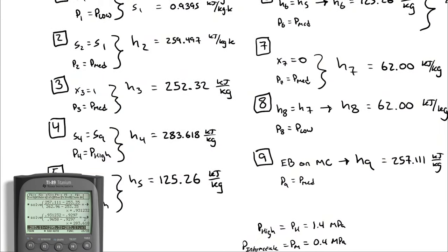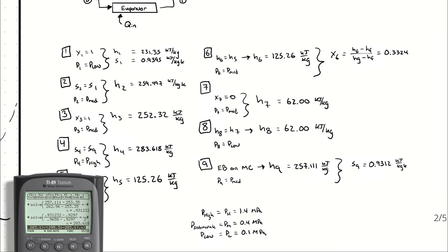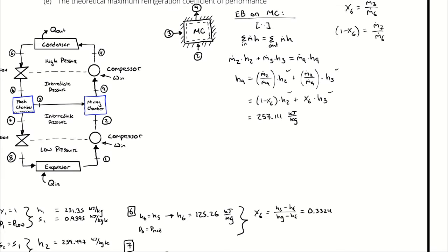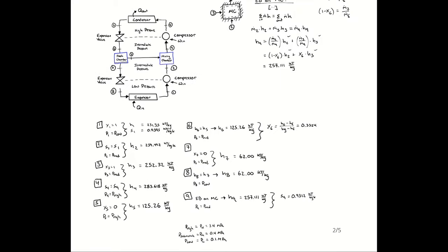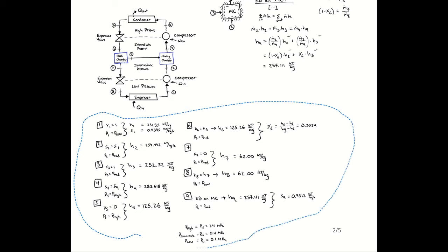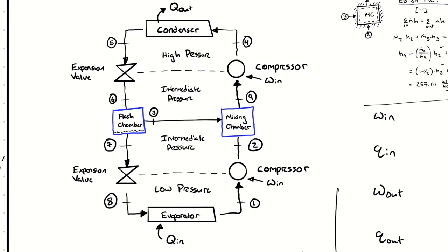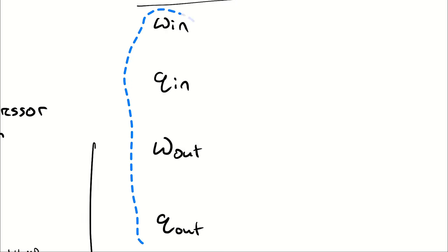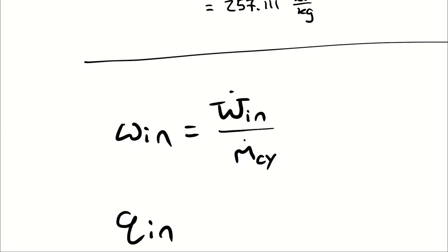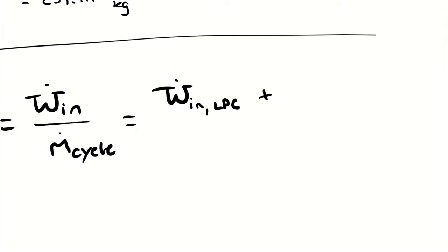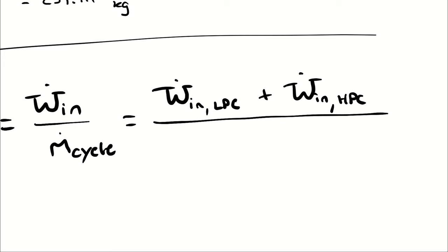With all enthalpies at all nine state points determined, I can now calculate work in, heat in, work out, and heat out. I'll shrink down the state point properties table to make room for the next phase of calculations.